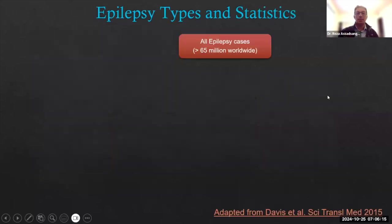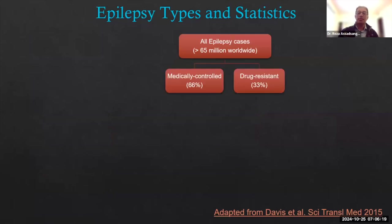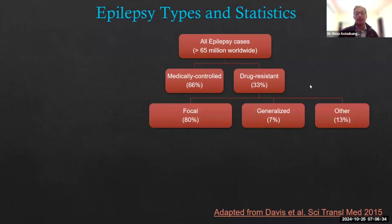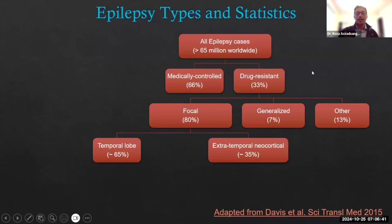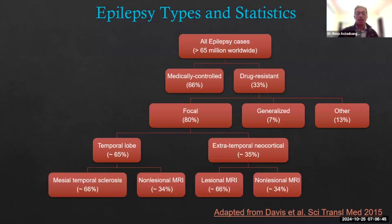Some statistics about epilepsy: 65 million are affected worldwide. 65% of epilepsies can be controlled medically, and 33% are drug-resistant. Among those who are drug-resistant, 80% are focal. Among focal cases, the most common location is the temporal lobe. In the temporal lobe, MTS — mesial temporal sclerosis — is the most common pathology. Among extratemporal neocortical pathologies, MRI plays a significant role, and in 65% of cases you may be able to find a lesion — these are lesional MRIs.